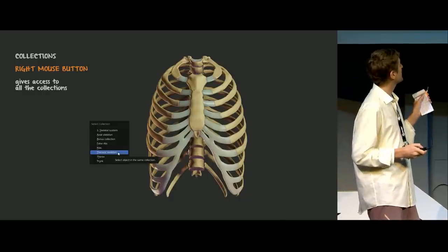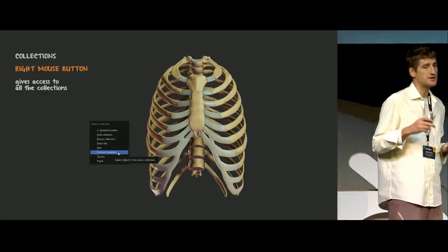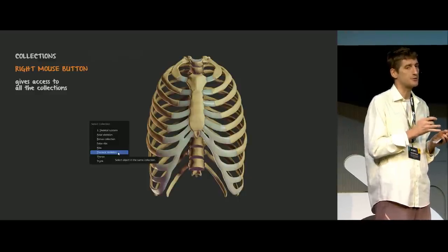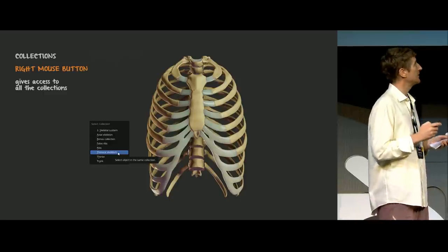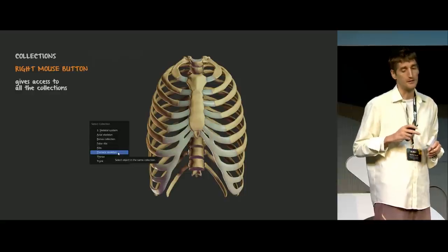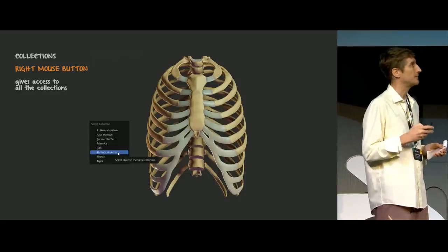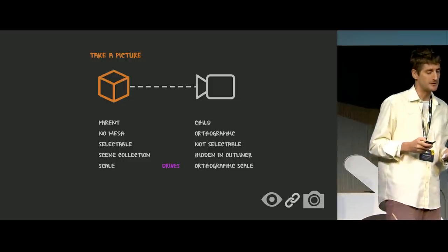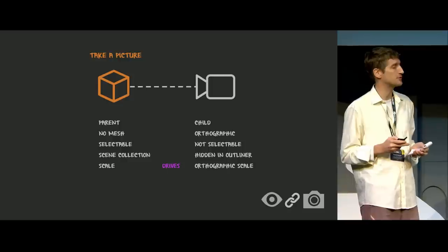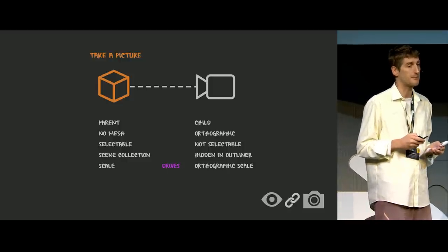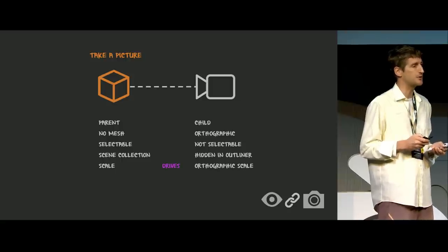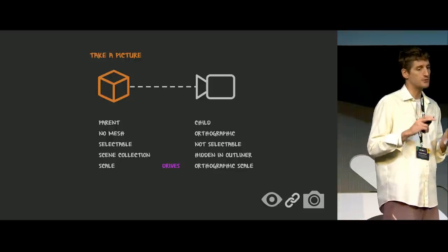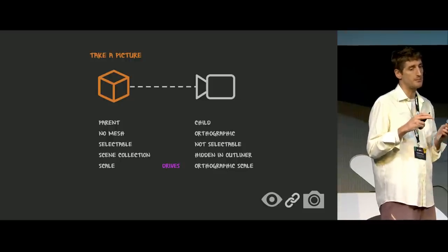The collection system is super useful because you can store different body parts either by type — like a muscle — which is already done through the layers. But you could also make collections like the thorax or the right lower limb, and so on. In order to provide a very easy system for a non-Blender user to take pictures and export — probably mostly an image, but animations are possible too — with a viewport render and this setup, the user can control all the parameters with only one empty mesh object. They scale it to drive the orthographic scale, and you just have three buttons to know, and you can export an image.